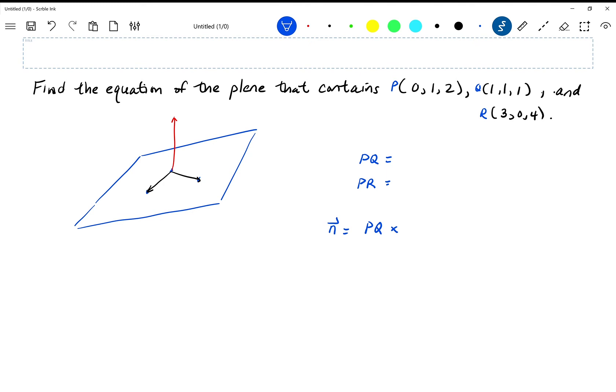So here we go with that. PQ is the vector, well let's see, we're going from zero to one so that's one, we're staying at one on the y components so that's zero, and we're going from two to one so that's negative one. And PR, we're going from zero to three so that's three, we're going from one to zero so that's negative one, and we're going from two to four so that's two.